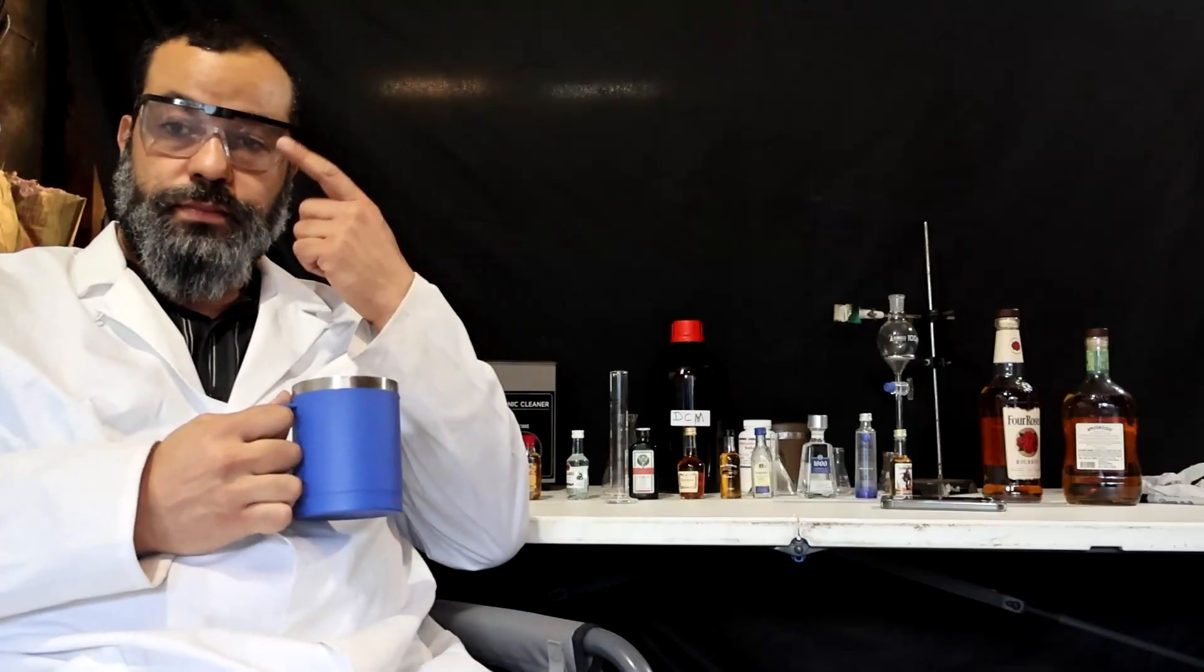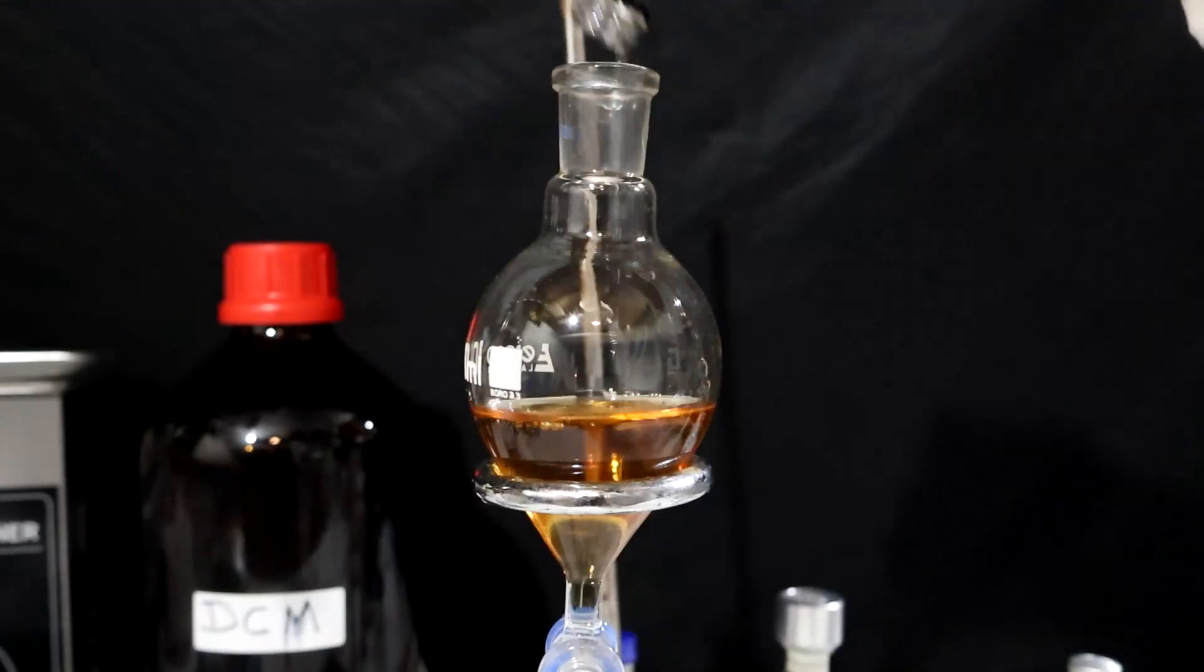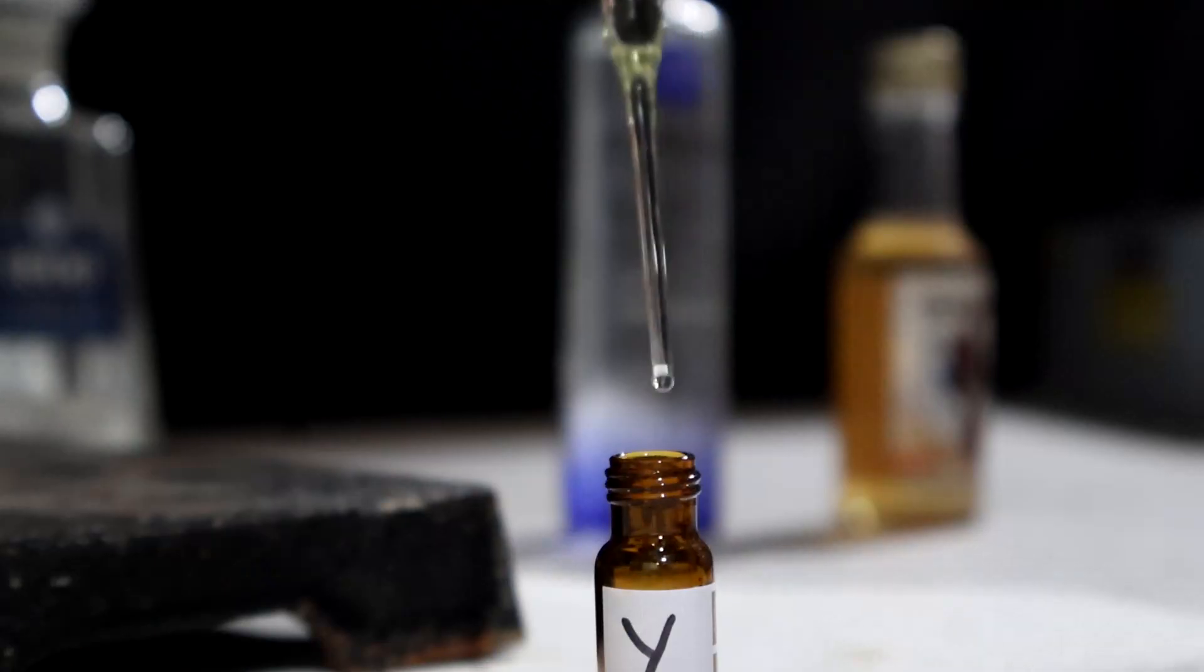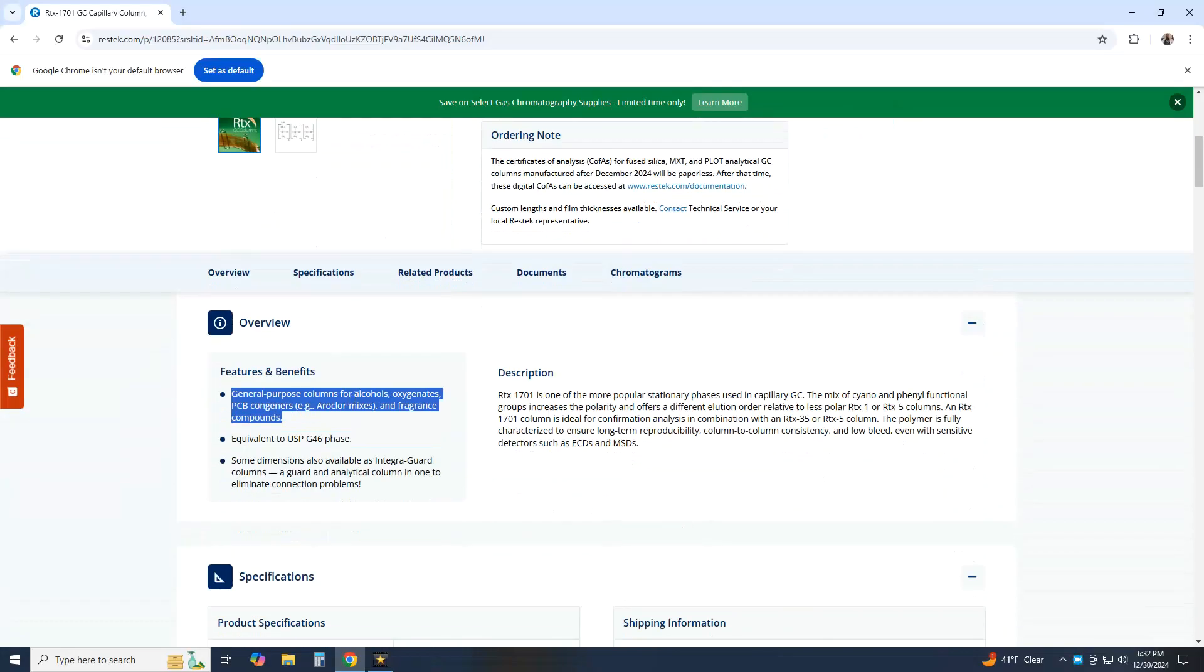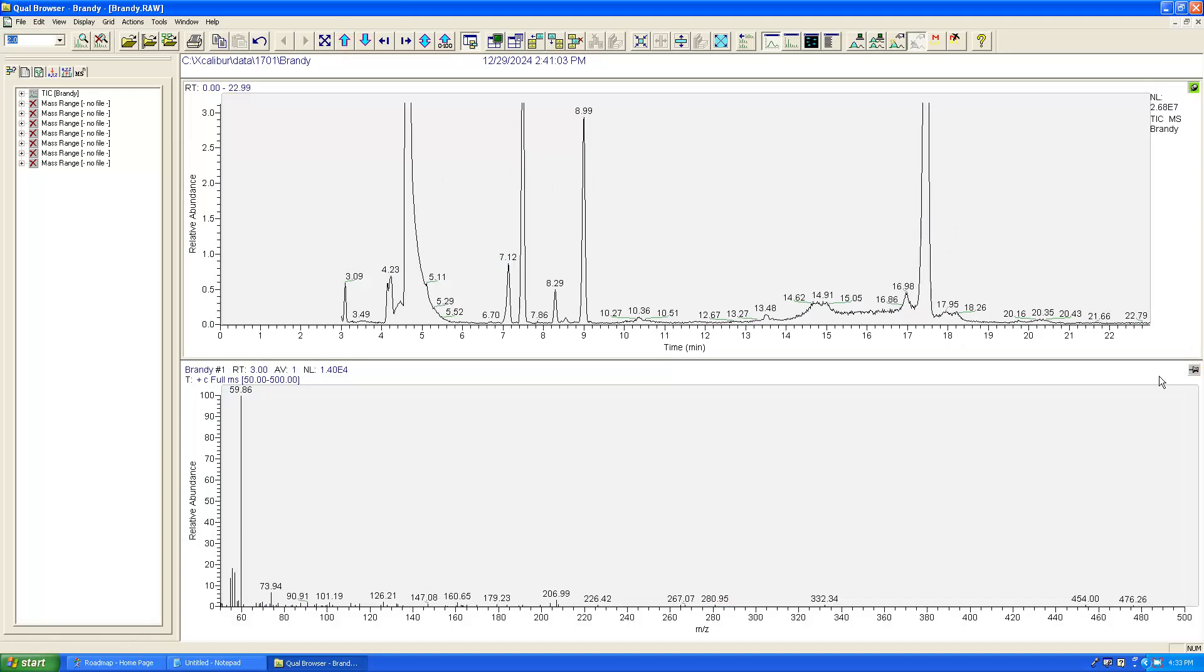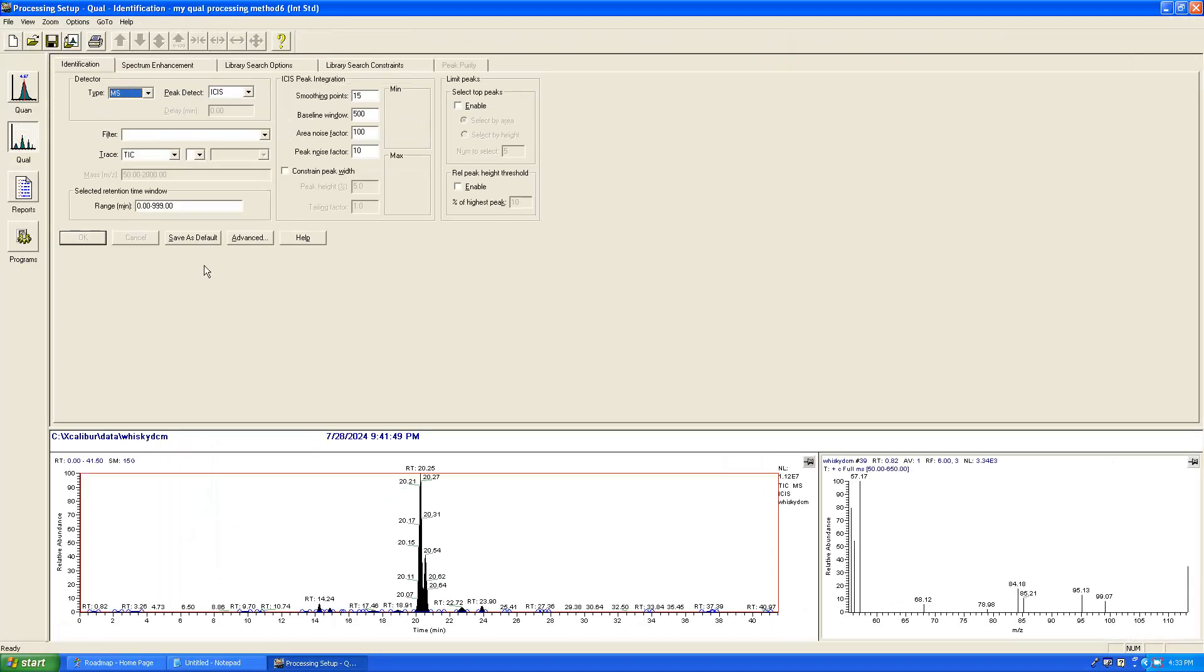The leftover concentrate is then stored in amber glass vials ready for injection. I'm using the 1701 Restek column specifically designed for alcohol, aldehyde, and organic acid. I tested it down to one part per billion for sensitivity and got acceptable results.